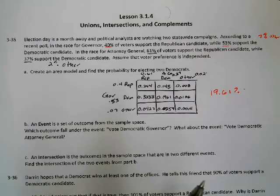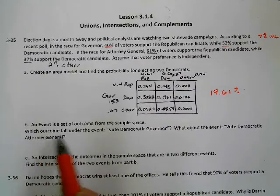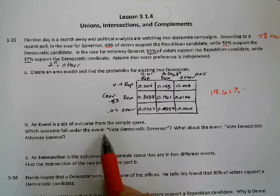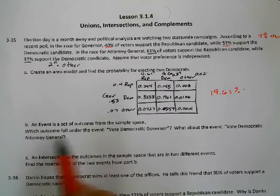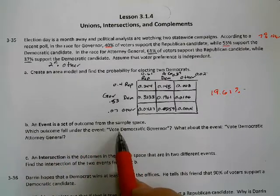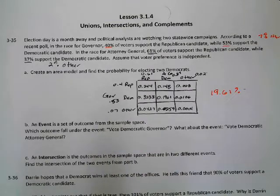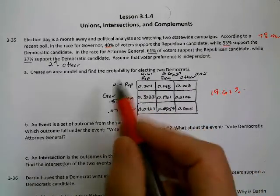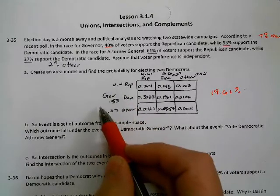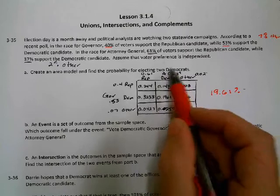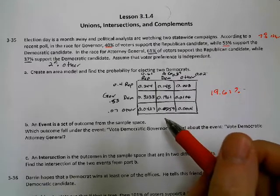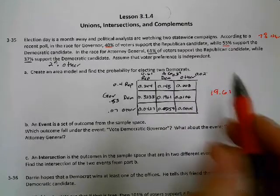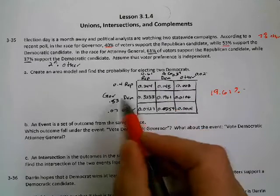Next part: which outcomes fall under the event of voting Democratic for governor? We've got two events: the vote for governor and the vote for attorney general. When we want two events to happen at the same time, this is what we call an intersection — we're doing Democrat AND Democrat.